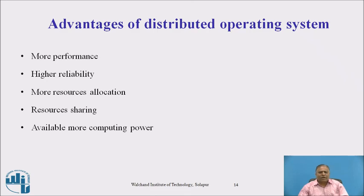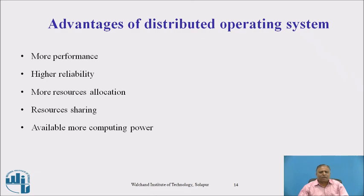Advantages of distributed operating systems: they give more performance than a single system due to greater processing power, and heavy jobs can be executed. Higher reliability — if one PC malfunctions, another node takes care of that task through process migration or replicas. More resources can be added easily and shared across multiple PCs. A distributed system may have more total computing power than a mainframe, enabling execution of heavy jobs.